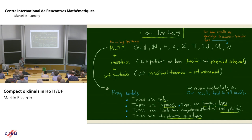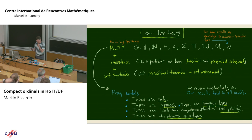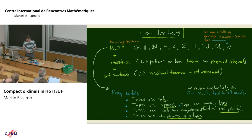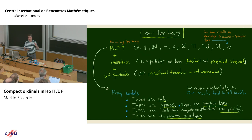I'll sometimes need set quotients — that's a higher inductive type technically speaking — but this is equivalent to having propositional truncation. The propositional truncation of a type X: you consider the unique map into the unit type and look at the image of this map.